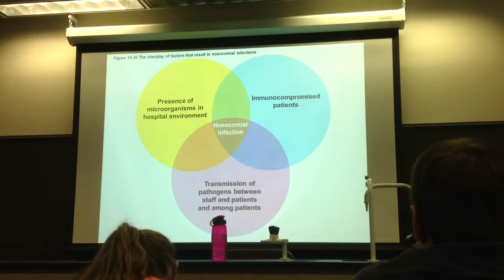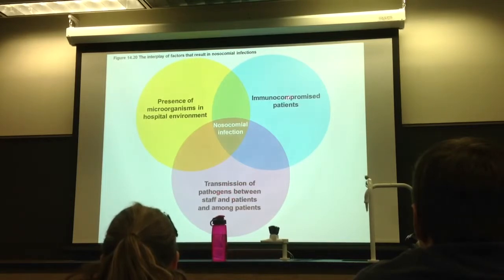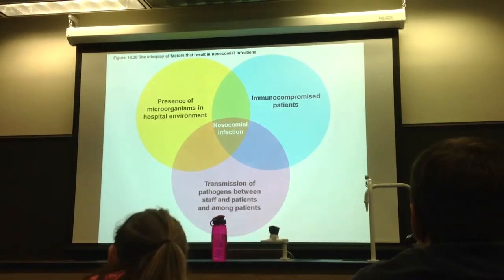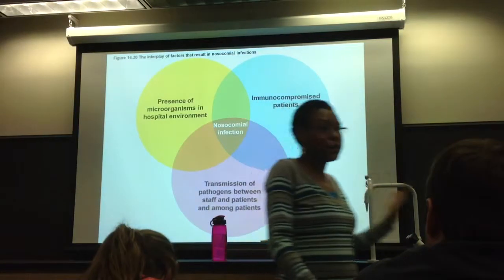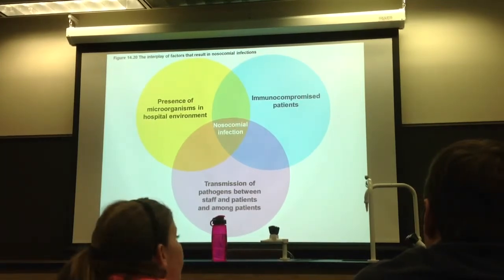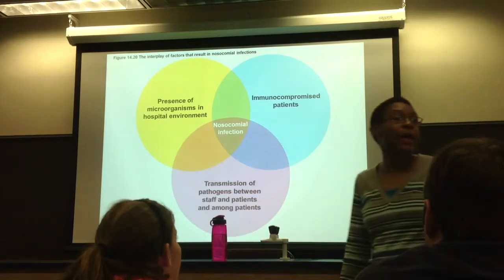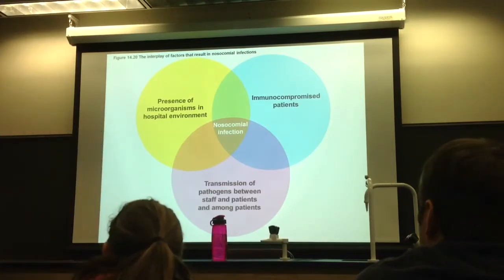That's not enough on its own. You also need the patient to be immunocompromised. Most of these pathogens are opportunistic — as long as you're healthy, they won't make you sick. Doctors and staff generally don't get these illnesses; the sick patient does. All three things — microorganisms, transmission, and a compromised immune system — must come together to cause a nosocomial infection.